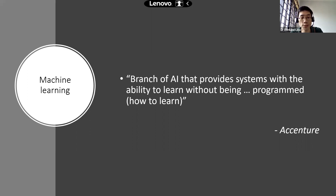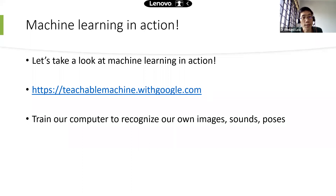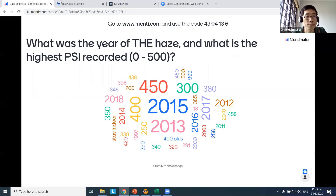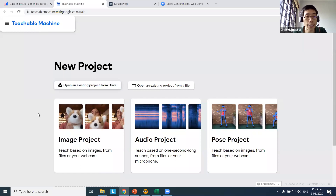Let's take a look at machine learning in action with a fun example we can try ourselves after the webinar: teachablemachine.withgoogle.com. We can train our computer to recognize our own images, sounds, and poses. Since I'm using my webcam for this session, I'll train my computer to distinguish between different sound clips. So I'm going to choose an audio project.